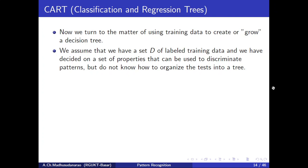We assume we have a set D of labeled training data and have decided on a set of properties to discriminate patterns, but do not know how to organize the tests into a tree. We have input feature vectors — for example here D=4 — with features: shape, size, color, and taste. Those values are present in the training data.